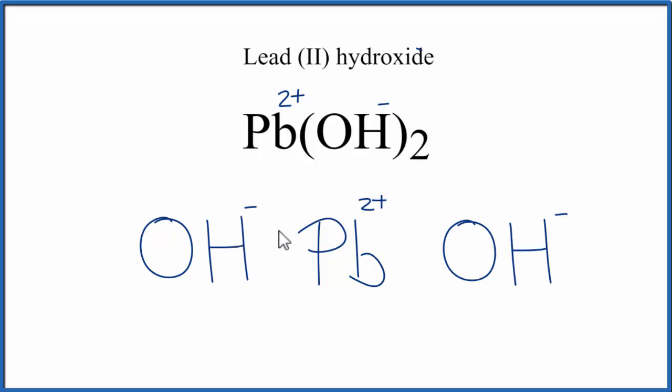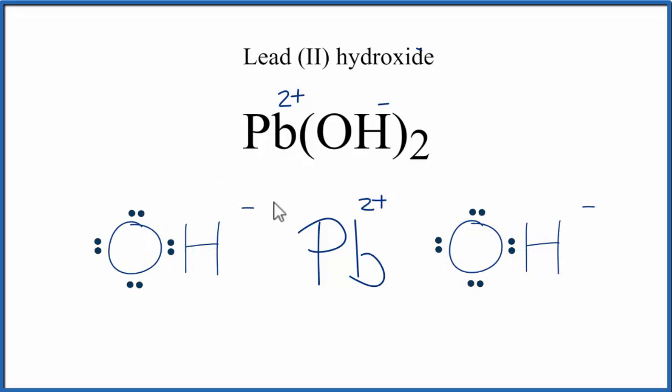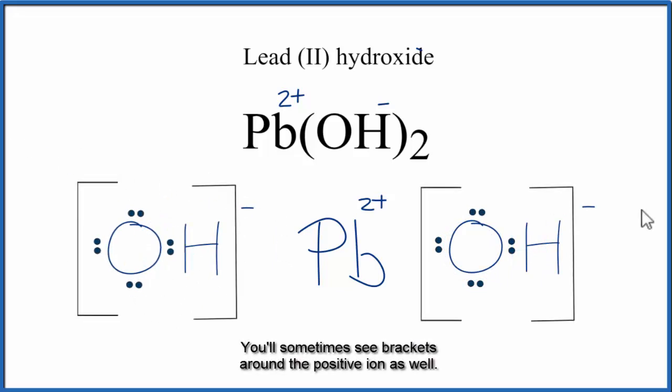Let's replace this with a Lewis structure for OH-. Next we'll put brackets around the hydroxide ion, and that makes this the Lewis structure for Pb(OH)2.